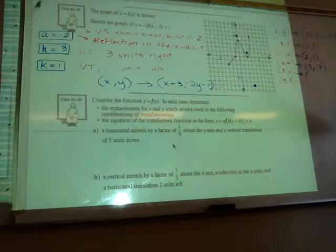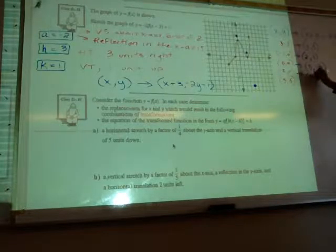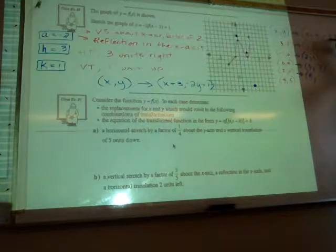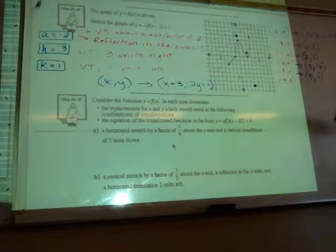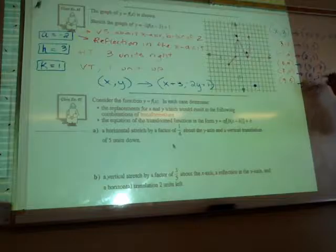Moving to the next point, 2, 0, 2 plus 5. Or sorry, 2 plus 3 is 5. We have 0 plus 1 is 1. So 5, 1.